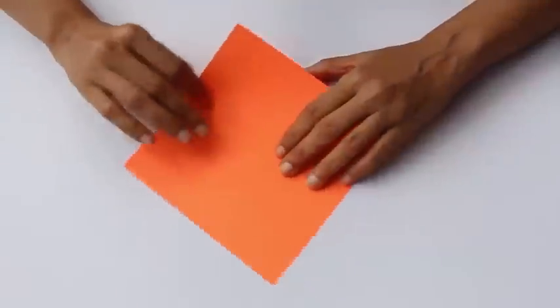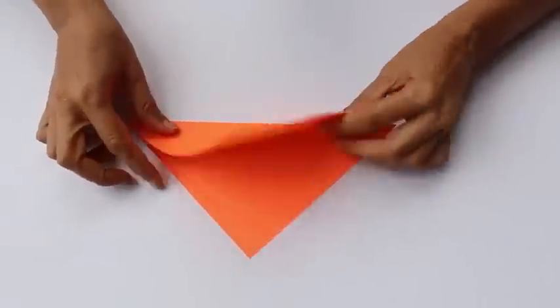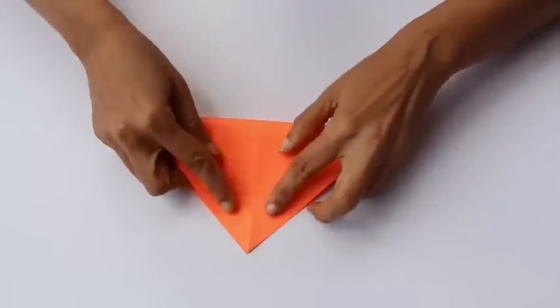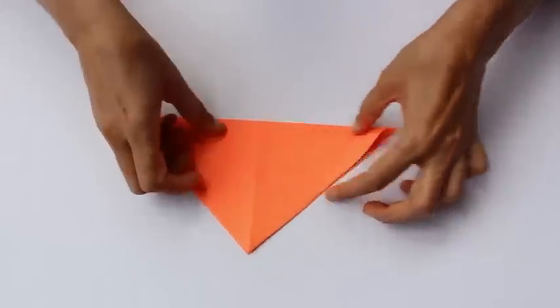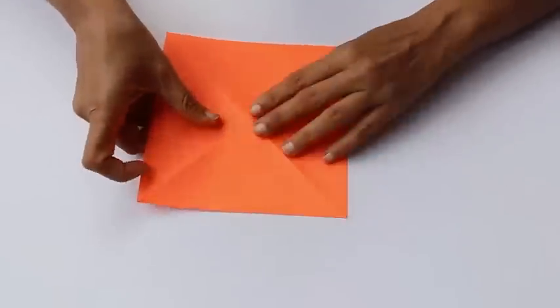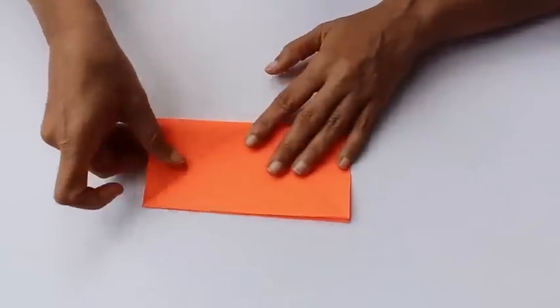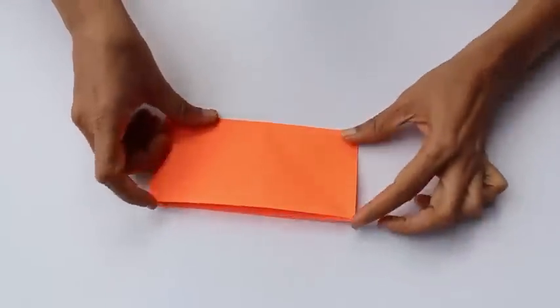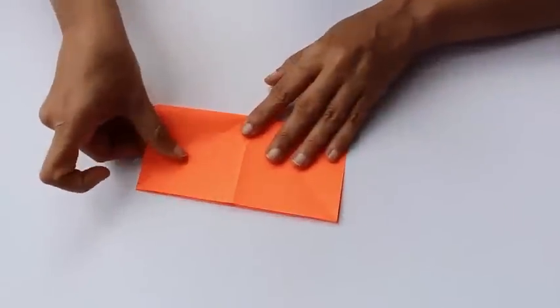First fold along the diagonal to make a big triangle. Open it up and make the other diagonal. Both the diagonals should be in the same direction. Then open the paper and make a minus sign. Once again open the paper and make a plus sign.